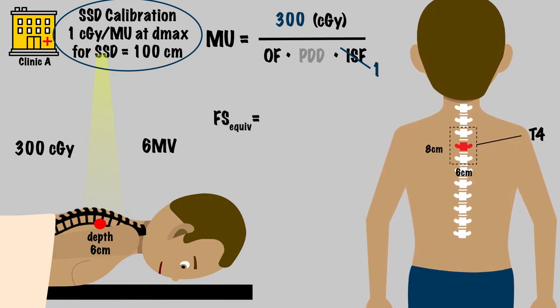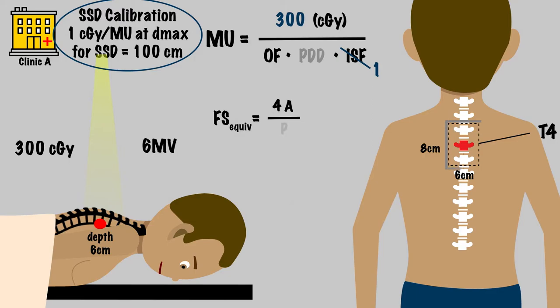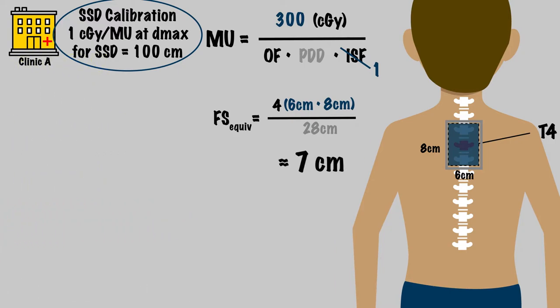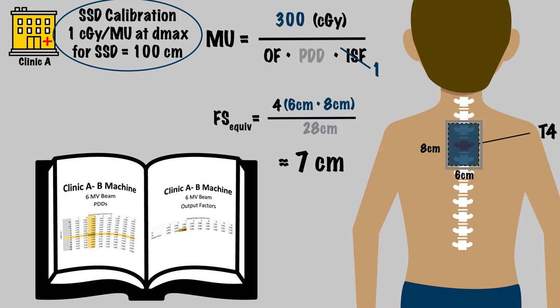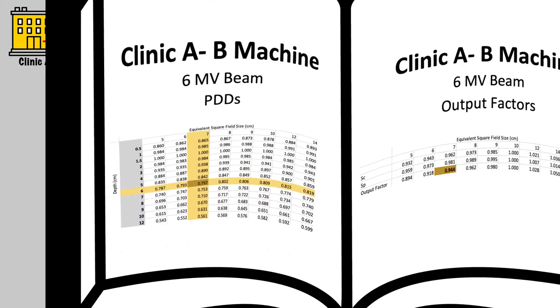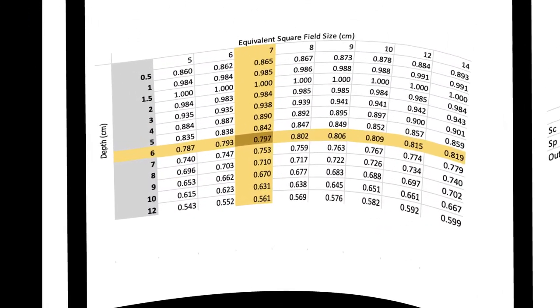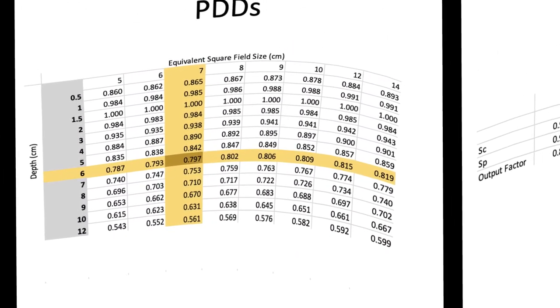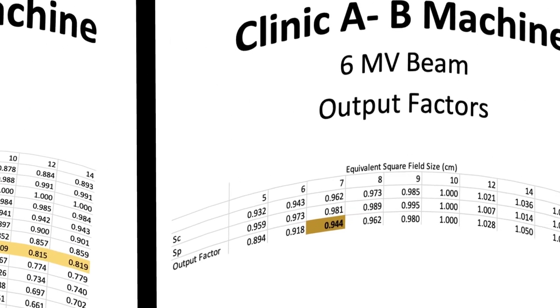Remember, equivalent square is equal to 4 times the area over the perimeter. In this case, we multiply the area of 6 times 8 by 4 and divide that product by the perimeter of 28, which is roughly equal to 7. Now we can look up our PDD by finding the cell corresponding to the equivalent square field size of 7 centimeters and a treatment depth of 6 centimeters. We find the PDD is 0.797.